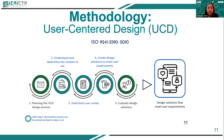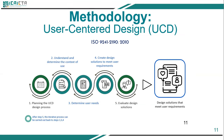Here is the methodology of user-centered design based on ISO 9241-210 from 2010. There are six steps: planning the UCD design process, understanding and determining the context of use, determining user needs, creating design solutions to meet user requirements, evaluating the design solution, and finally producing a design solution that meets user requirements. The UCD methodology is chosen because it can improve user experience, is user-focused, and can validate problem analysis with the user itself.